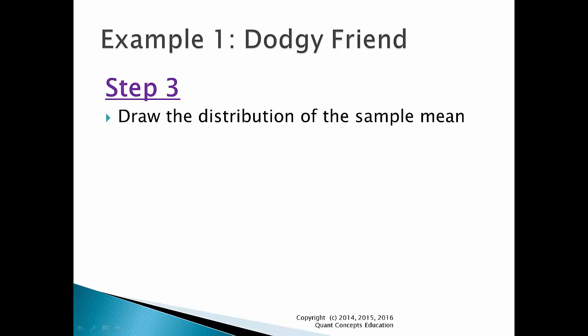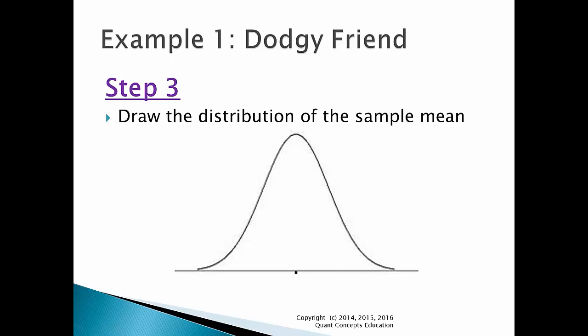Step 3 is drawing the distribution of the sample mean. We assume the sample mean follows a normal distribution. We assume the null hypothesis is true, meaning we can assume the population mean — the average of the sample mean — is equal to 150. The next thing we need to do is draw the rejection region. Since this is a lower-tailed test because there is a less than sign in the alternate hypothesis, the rejection region is on the left-hand side of the distribution. The significance level is 5%, so the size of the rejection region is 5% of the entire area. Figuring out the critical value is probably the hardest part of hypothesis testing. I'll show you how to use the z tables, also known as the standard normal distribution tables, contained in the back of your textbook or provided by your course instructor.